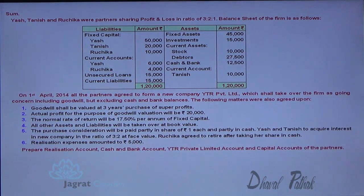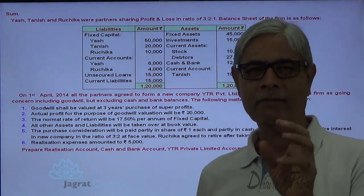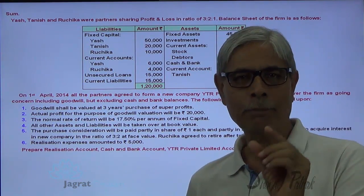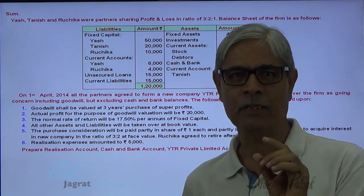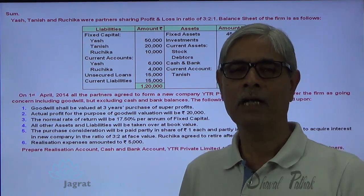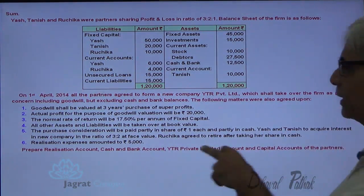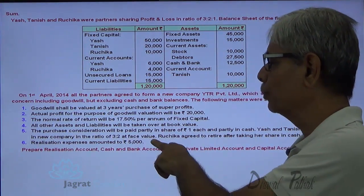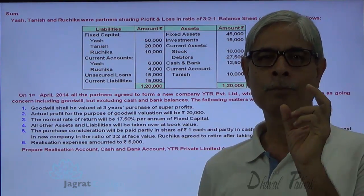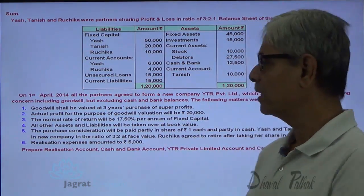All other assets and liabilities are taken at book value. The purchase consideration will be paid partly in equity shares of rupees 1 each and partly in cash. Whatever purchase price we work out, that will be paid partly in cash and partly in equity shares. Ruchika agreed to allow Yash and Tanish to acquire the interest in the new company in the ratio of 3 to 2 at face value. So the total consideration received in the form of shares will be distributed between Yash and Tanish in the ratio of 3 to 2.